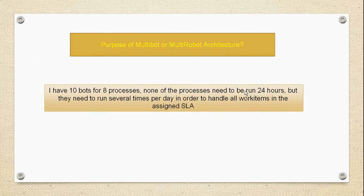So what is the purpose of moving to multiple bots? Suppose I have 10 bots for 8 processes — none of the processes need to run 24 hours, but they need to run several times per day to handle all work items within the assigned SLA. When we talk about service level agreement, clients set a particular SLA. Suppose your defects need to be fixed within 24 hours — that is the target your work has to complete 100%.